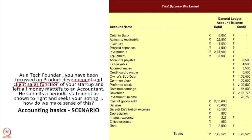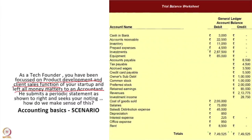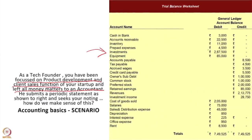Let's suppose that you are a tech founder and you have been focusing on your product development and client sales function in order to get your business off the ground. You have done a wonderful job, your startup is successful, and you have made your first sales. In all the 9 to 10 months of your journey so far, you left all money matters to an accountant. He comes to you at a time when you are doing reasonably well, and he shows you a periodic statement — a trial balance worksheet — and wants you to understand what this trial balance really is.